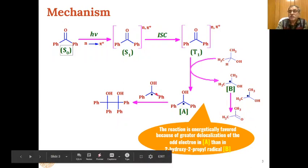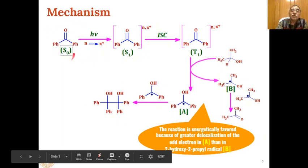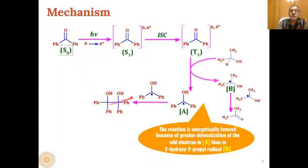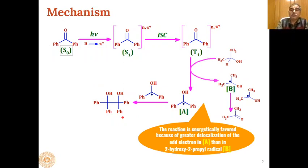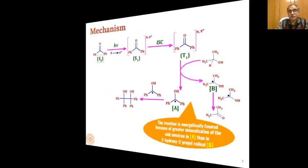The two ketyl free radicals combine to give a molecule of benzopinacol. This is how benzophenone is converted into benzopinacol through photo reduction of diaryl ketones.